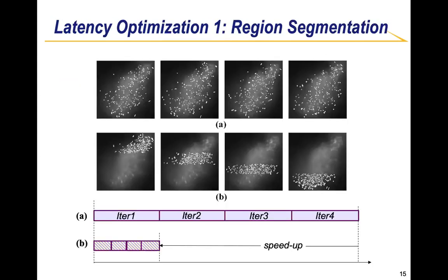We introduce three latency optimization methods for the Tracing Accelerator. The first one we call region segmentation. In our design, we reuse the Tracing Accelerator four times to complete all the trace extraction tasks. By default, cells distribute evenly in each round of the tracing. If we segment regions and constrain the cell locations within a certain region under each iteration, we can save computation time because we can bypass the scanning of a large portion of the image under each iteration.